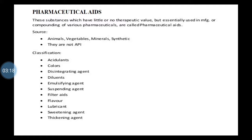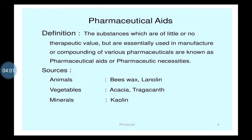The important sources of pharmaceutical aids are animal source, vegetable source, mineral source, or synthetic source. They are not API — API means active pharmaceutical ingredient. This is the classification. You must know all these terms, newer terms you are going to study, so their definition with examples you have to refer to in the textbook. Pharmaceutical aids are substances which are of little or no therapeutic value but are essentially used in manufacture or compounding of various pharmaceuticals.